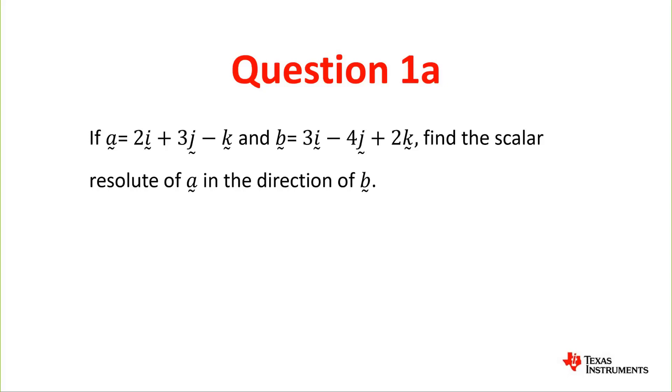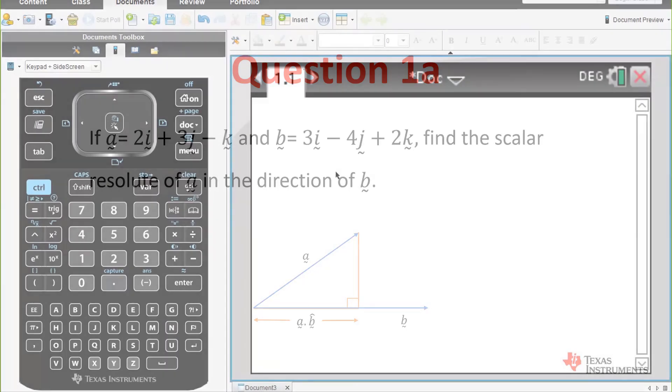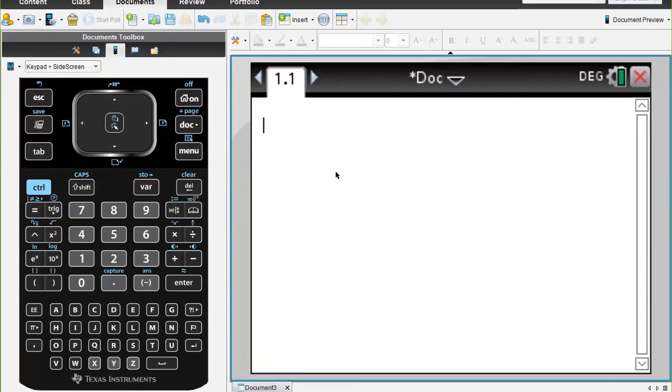It's good to draw a diagram. There's our two vectors. Vector a is made up of two components, a horizontal and vertical one, and what we need to work out is vector a dotted with vector b hat.